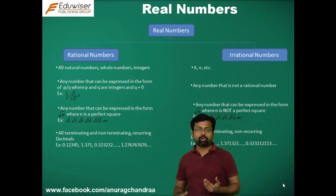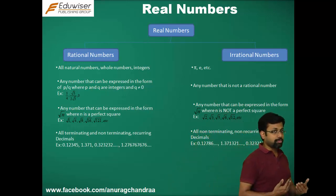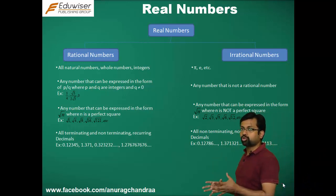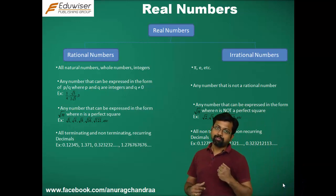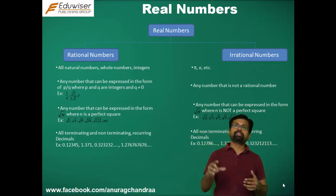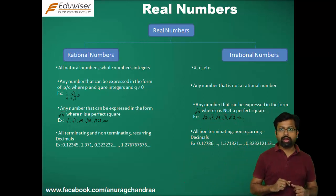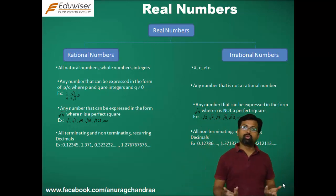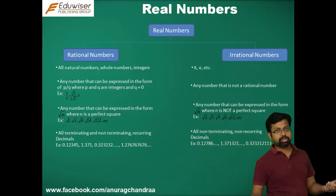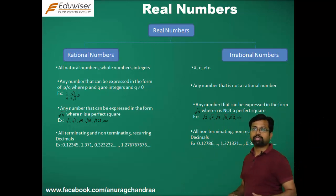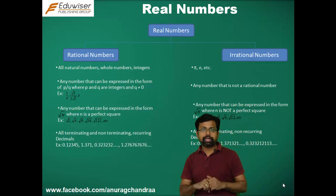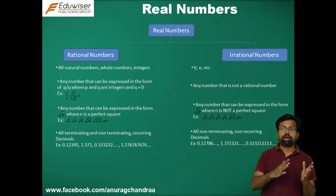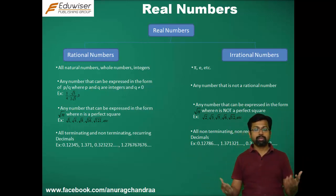For example, root 4, root 9, root 16, root 25 — the number within the square root is a perfect square, and hence the resulting square root is going to be a rational number. But if the number within the square root sign is not a perfect square, then that number is irrational. For example, root 2, root 3, root 5, root 6, root 7, root 8, root 10, root 11 — all these numbers are irrational.